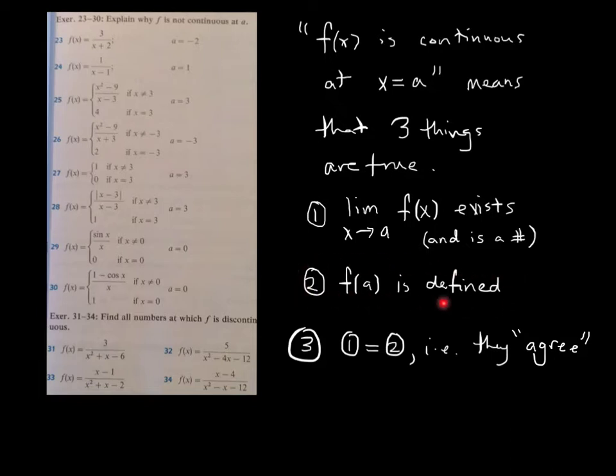So, if the point is not in the domain, then forget about it. Then it's not continuous. Exactly. I wouldn't forget about it because there are ways to make a function continuous. But we're just asking the question, yes or no, is it continuous? Later on, we'll talk about whether or not we can fix the problem. So, f of a is defined. That's one of the requirements.